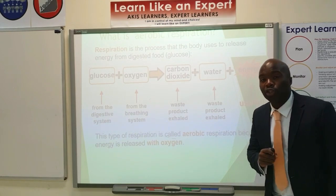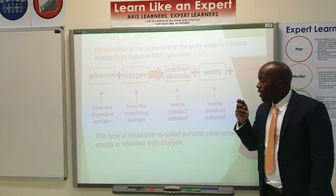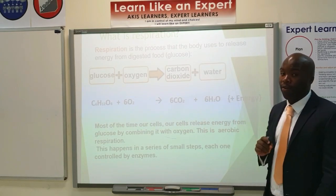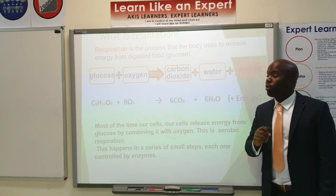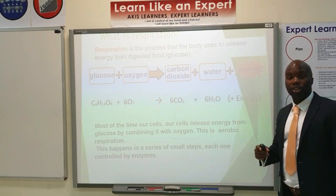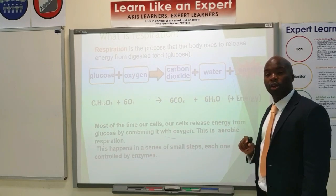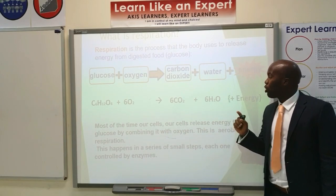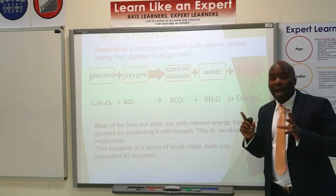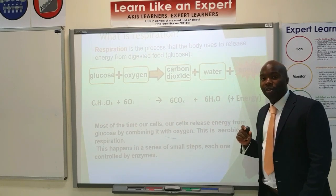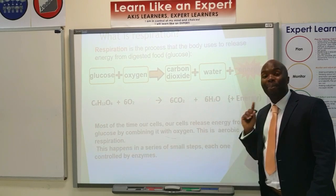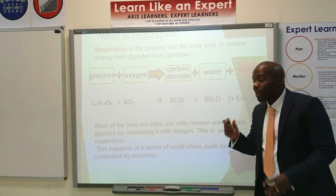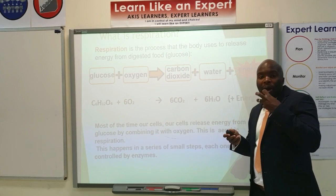Aerobic respiration requires oxygen. The word equation is glucose plus oxygen produces carbon dioxide, water, and energy. The balanced symbol equation for aerobic respiration is: C6H12O6 + 6O2 → 6CO2 + 6H2O. Pause the video and make notes on both the word equation and the balanced symbol equation for aerobic respiration.